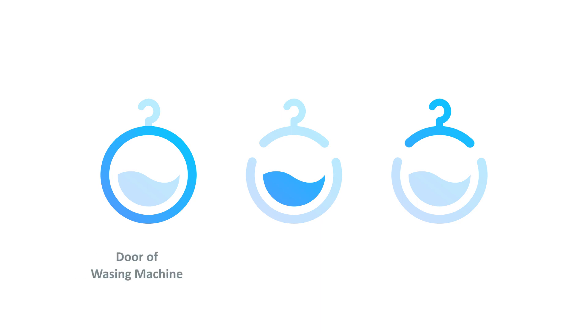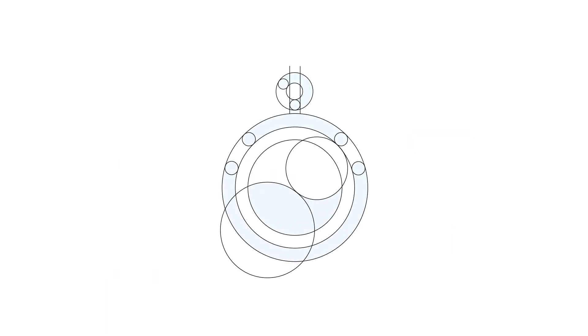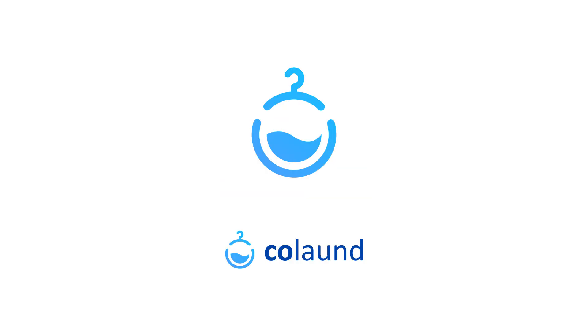Let's break down this logo into different parts so we can understand the logic behind it. This part represents the door of the washing machine, this part represents the water, and this hanger represents the dry cleaning services. If you want to design this logo yourself, this is the basic geometry that I used before the design process.